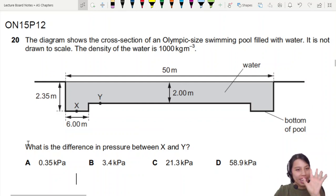We have here a swimming pool, nice and big. Imagine this is water and you have a density of water. It asks us to find the difference in pressure between X and Y. So X is down here, very deep, lots of water pressing on top. Y, not so much water pressing on top.